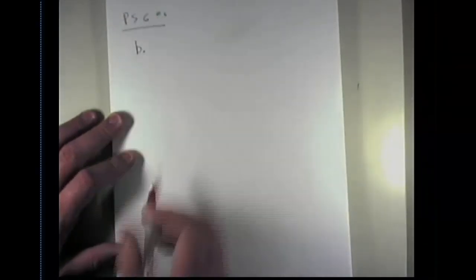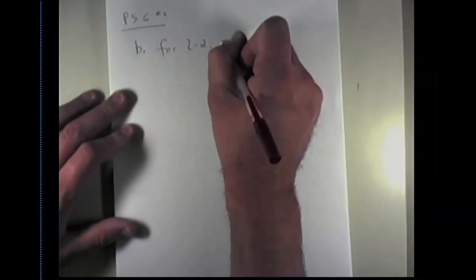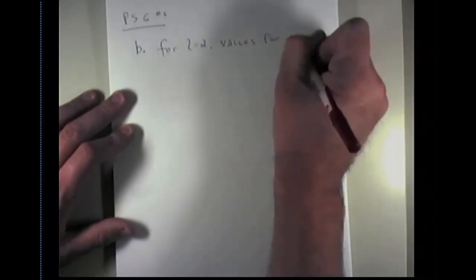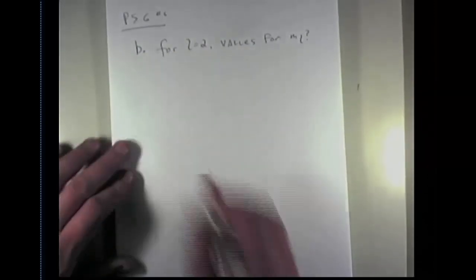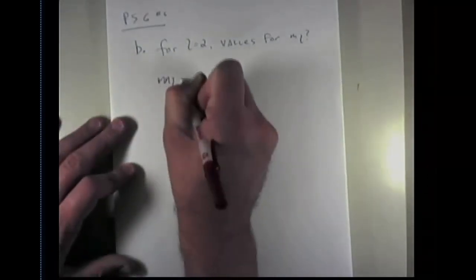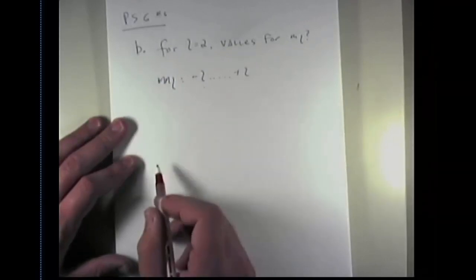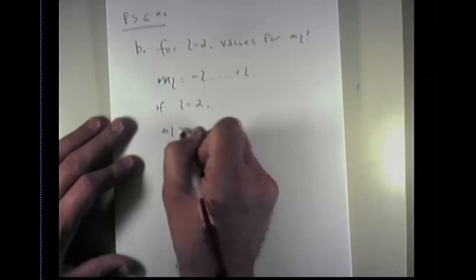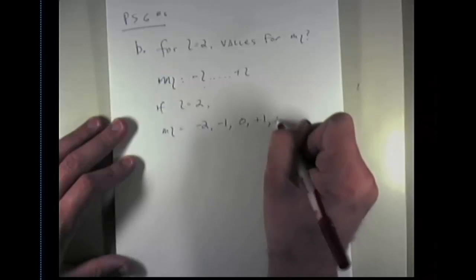In part b, problem set six, question six, we're asked: for l equals two, what possible values could we have for m sub l? You may remember from a previous slide that m sub l has values of minus l all the way to plus l and every integer in between. So if l equals two, m sub l can equal minus two, minus one, zero, plus one, and plus two.